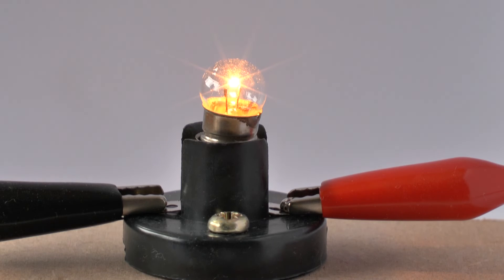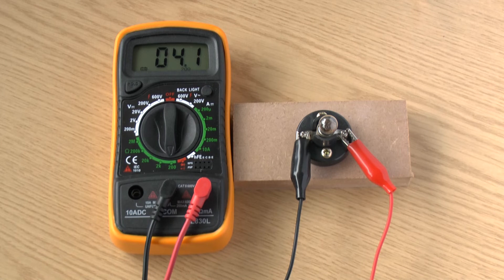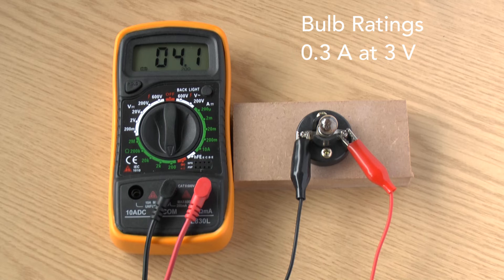One common example is that of an incandescent light bulb. A simple test shows there may be an issue. The resistance using an ohmmeter shows that the bulb has a resistance of around four ohms as we see here. But its ratings show that it consumes around 0.3 of an amp at three volts, and this gives it a resistance of 10 ohms.